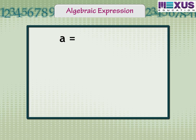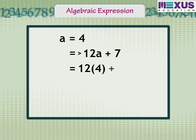Similarly, if a is equal to 4, then 12a plus 7 becomes 12 times 4 plus 7. We get 48 plus 7 equal to 55. We can see that the value of an expression changes with the value chosen for the variables it contains.